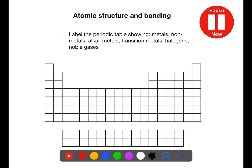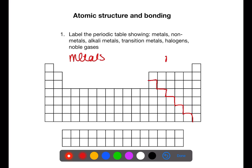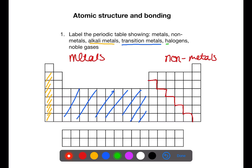Pause the video and label this periodic table showing metals, non-metals, alkali metals, transition metals, halogens, and noble gases. There is a step line in the periodic table which separates the metals on the left from the non-metals on the right. There are four areas of the periodic table you're expected to know: Group 1 are the alkali metals, the section in the center is known as the transition metals, the halogens are Group 7, and the noble gases are Group 8.